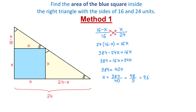Now, once we know that one side of the square is 9.6 units, we can find the area by raising 9.6 to the second power. Area equals 9.6 squared, which makes 92.16 square units. This was the first method — now let's see the second one.